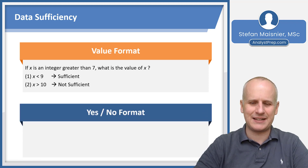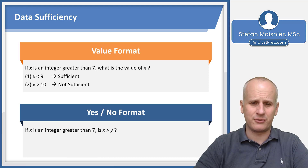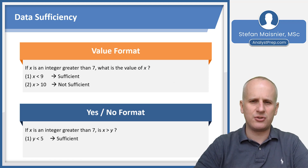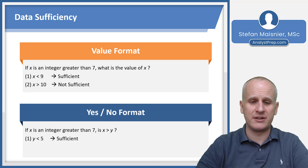The yes/no format is just slightly different. We have a variation: if x is an integer greater than seven, is x greater than y? We know that x cannot be a fraction or a decimal, it is greater than seven, and we need to compare it to y. So if condition one were to state that y were less than five, then this is sufficient because x being greater than seven and y being less than five — which itself is less than seven — would definitively answer the question: x is always greater than y. So condition one alone would be sufficient.